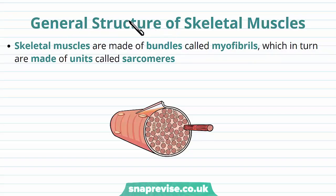So the skeletal muscle has a kind of hierarchical structure. The skeletal muscle cell is made up of lots of bundles running along the cells called myofibrils, and in turn those are made up of units called sarcomeres.